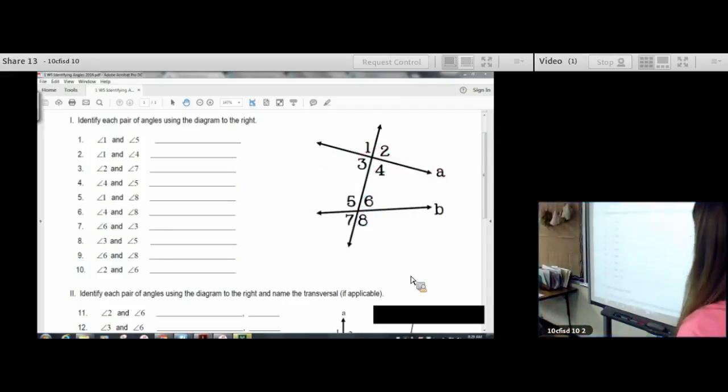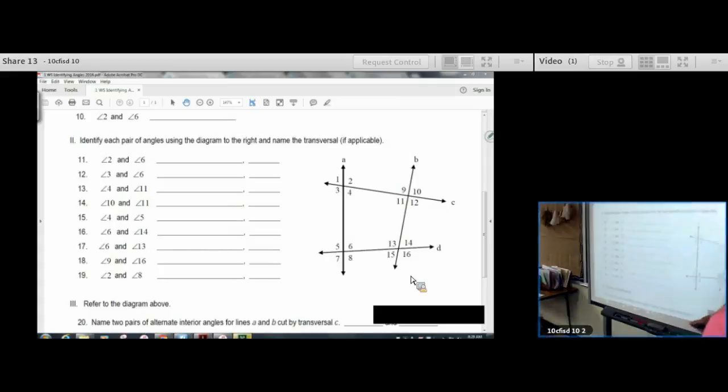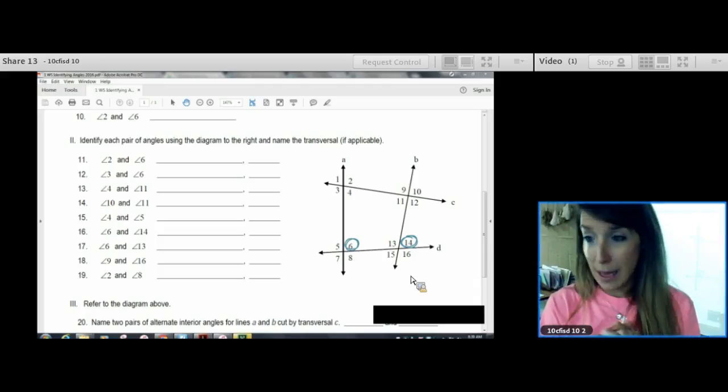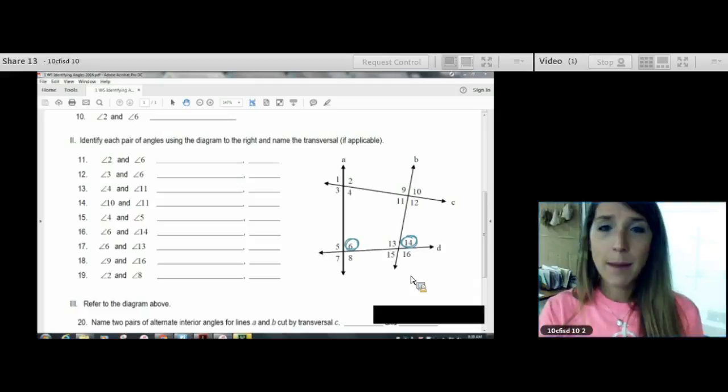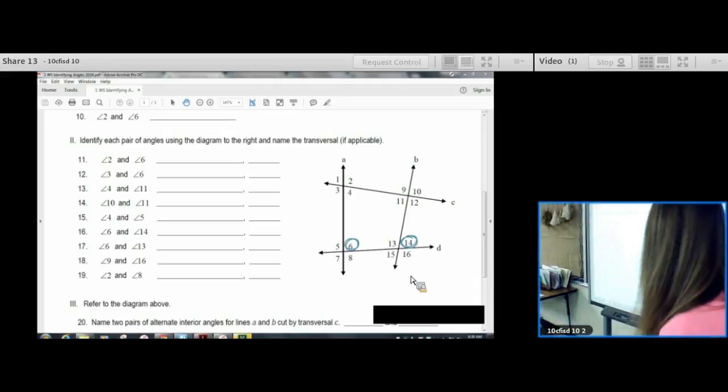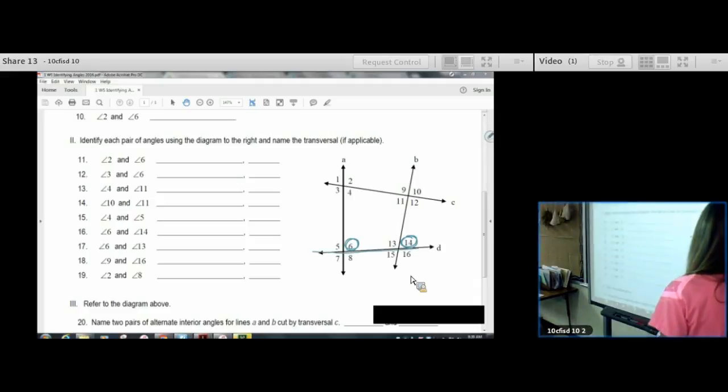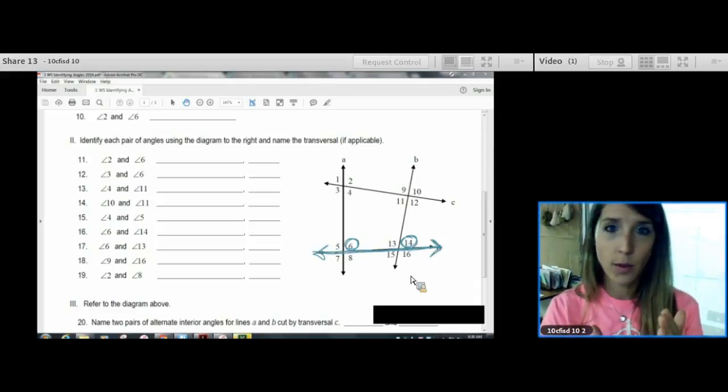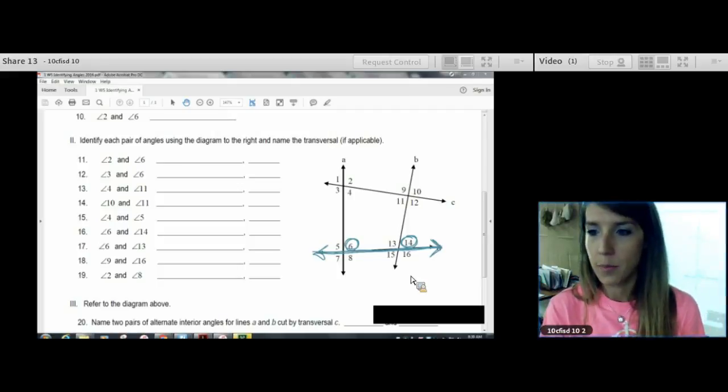Okay, sixteen. We're going to look at angles six and fourteen. And one thing we want to do here is we want to be asking ourselves, are these angles same side or alternate? Maybe first you want to identify the transversal. The transversal is the line that both angles are touching. There's only one line in the whole picture that's touching angle six and angle fourteen.